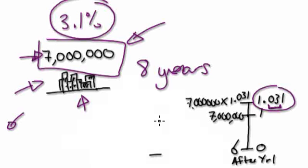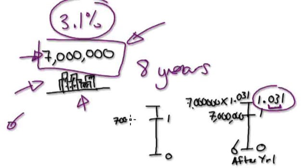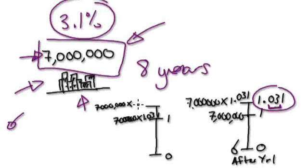And then year 2 would look something like this. This would be 7 million times 1.031. And then up here would be 7 million times 1.031 squared — after year 2.